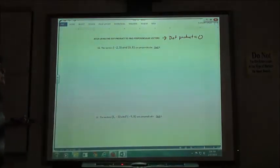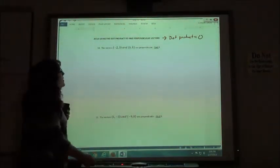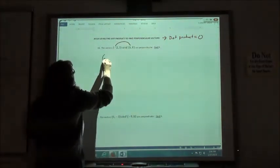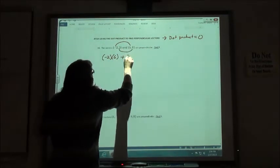So basically, I'm setting up an equation where I'm finding my dot product and putting it equal to 0 and then solving it for my missing variable. To do the dot product, I'm going to take the negative 2 times the 6 plus the 3 times the k.